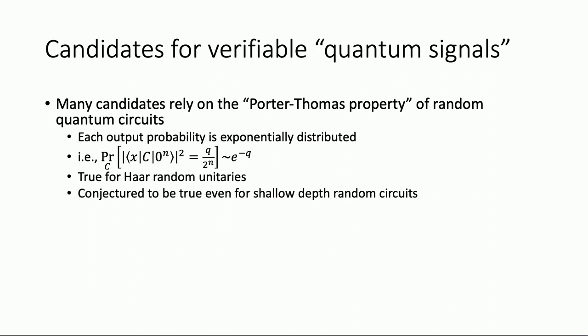The Porter-Thomas property is conjectured to be true even for approximations of the global Haar measure. For example, we think we see it even in relatively shallow depth quantum circuits, but generally speaking this is not proven — it's numerically observed, and many people believe it holds even at relatively shallow depth, say square-root-N depth in a 2D grid. But we don't have a proof, and it doesn't follow from something like a 2-design or K-design. So this is really based on numerics.